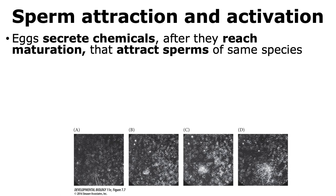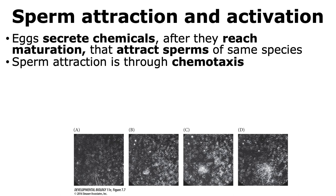Let us now look at the different stages of fertilization in sea urchins. The sperm and eggs are in a water-based environment, so how does the sperm know where to go to find the egg? Eggs secrete chemicals after they reach maturation that attract sperms in a species-specific manner. These chemicals form a concentration gradient that the sperm will follow, and hence sperm attraction occurs through the process of chemotaxis.